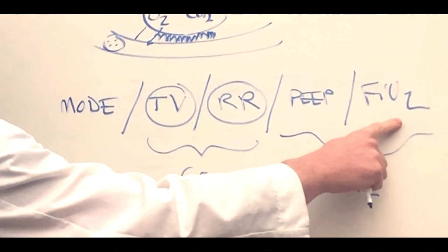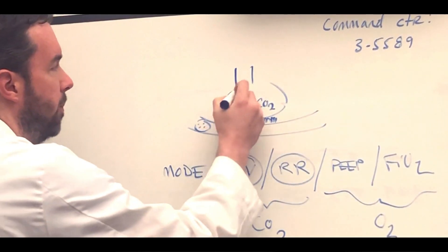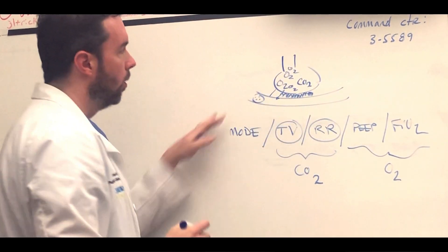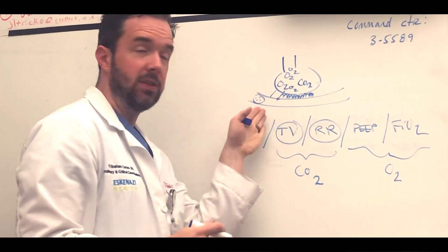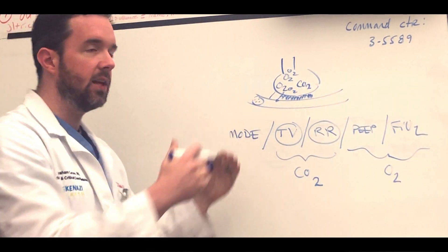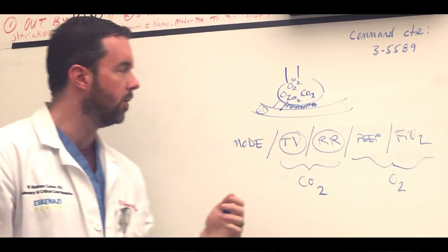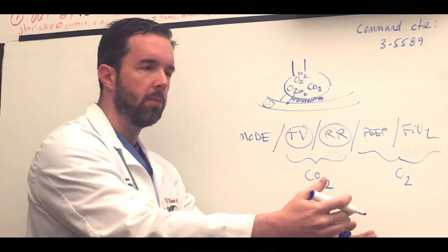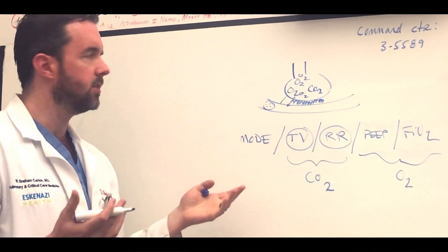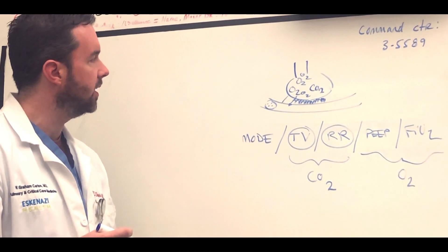We'll take the last one first, FiO2. If we put more oxygens in the alveolus, we're going to have more ability to get oxygen diffused across and jumping on the hemoglobin. So by increasing the FiO2 from room air, which is 21%, as we go up and up, we have more ability to oxygenate. I think that's the most straightforward concept to understand.